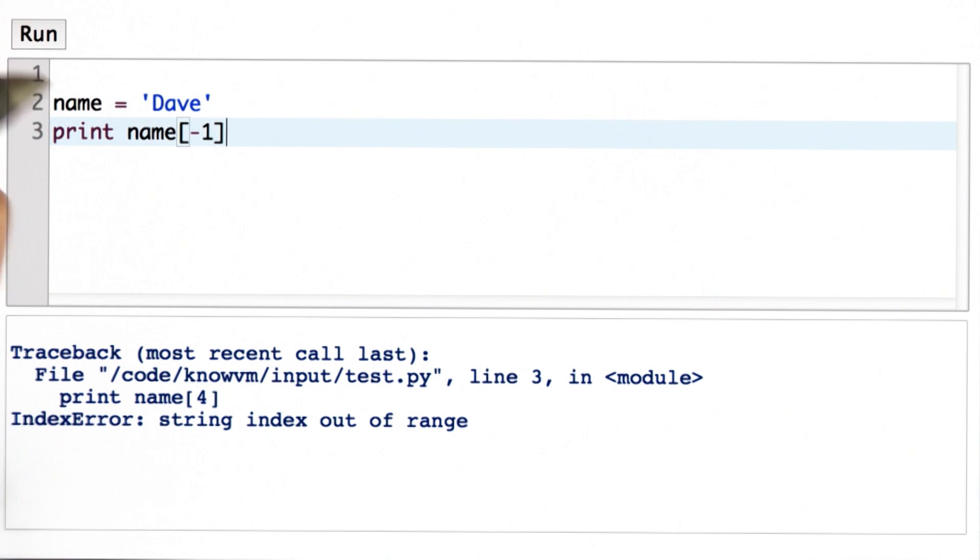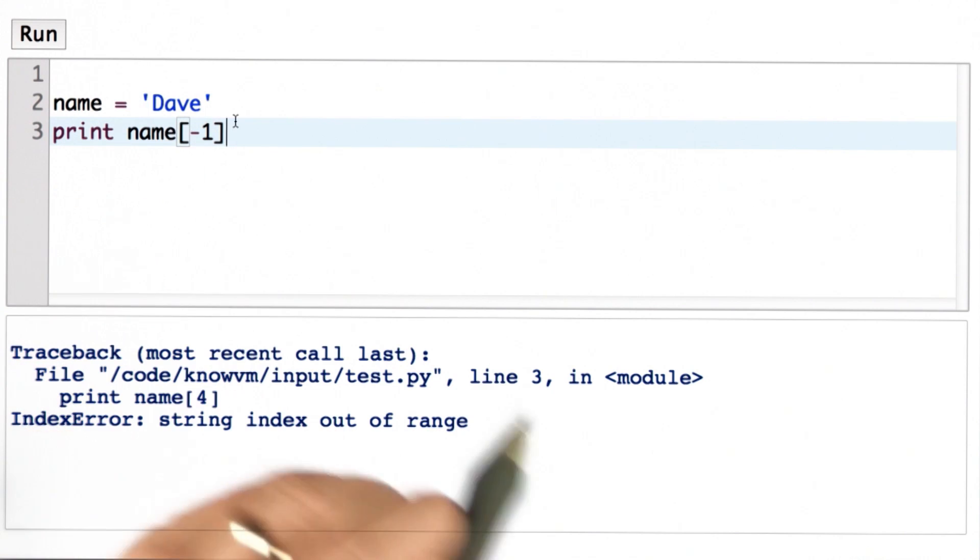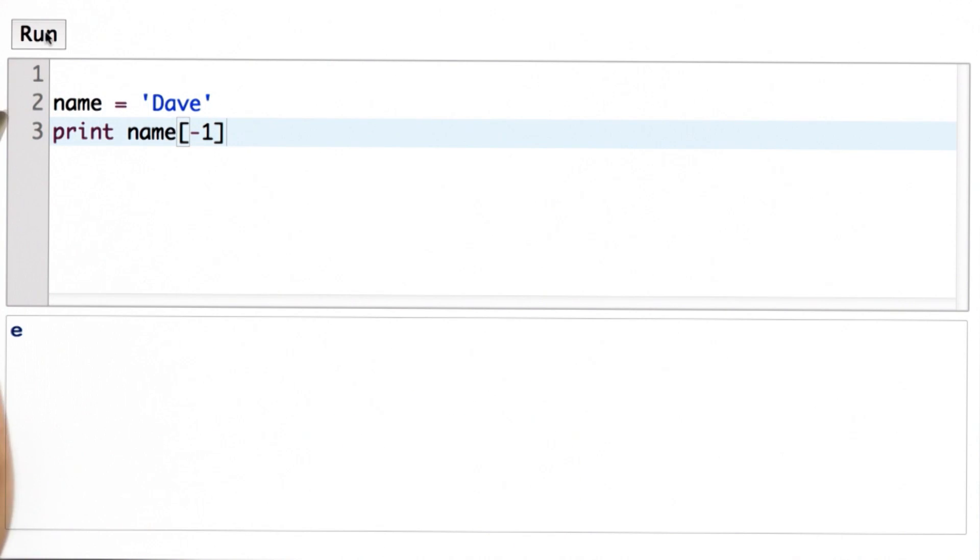What I can do is use negative numbers. When I use negative numbers in my index, it starts counting from the back of the string. So name index negative 1 will give us the last character in the string. If I do name index negative 2, that will give us the next to last character, which is the V.